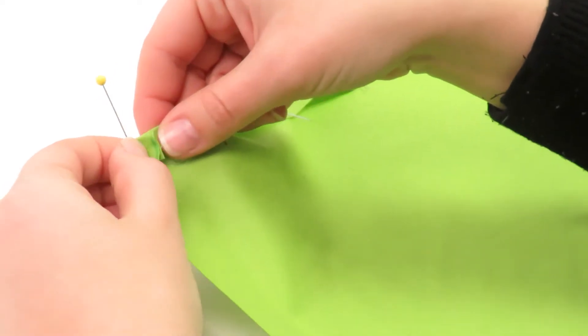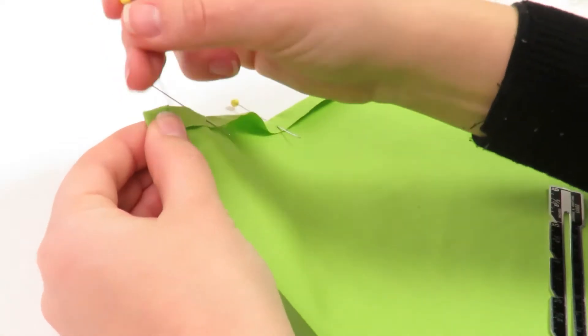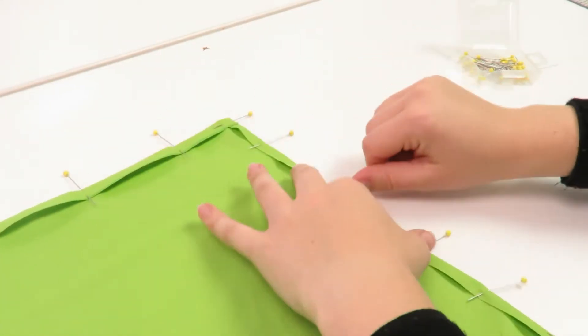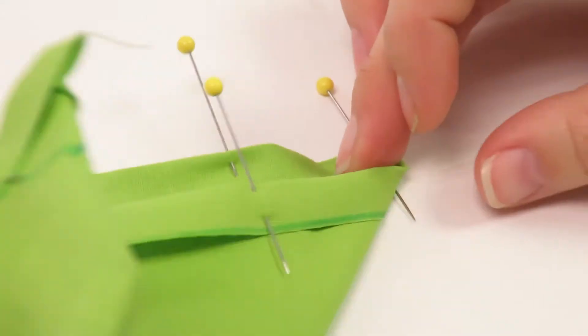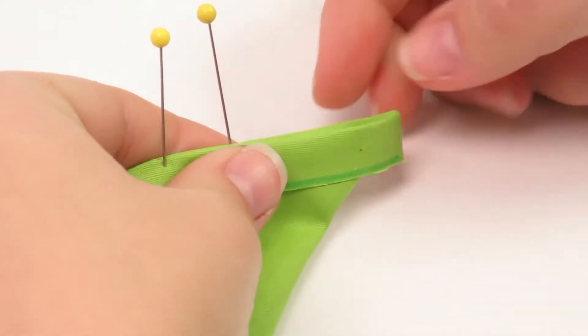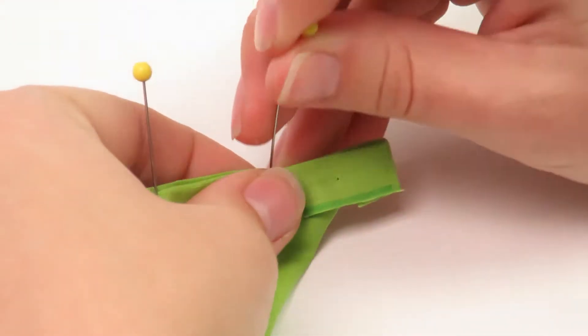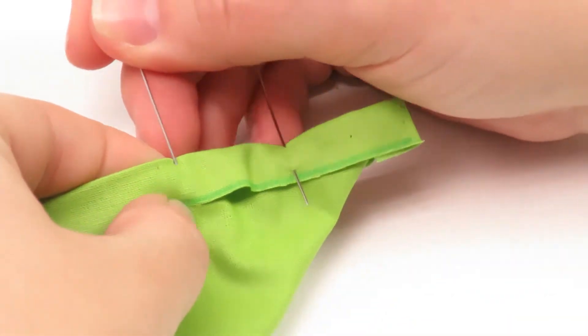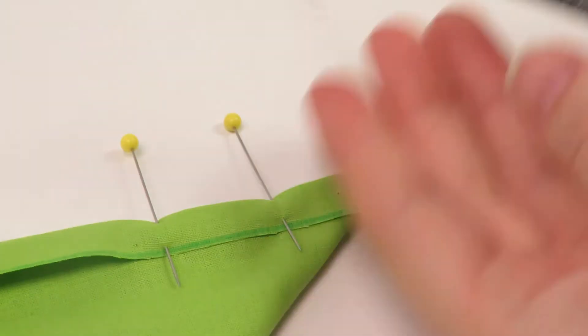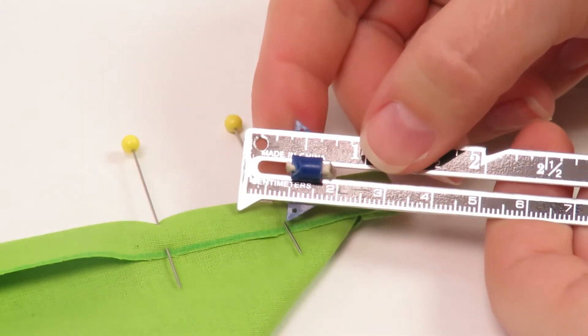You can finger press all around the seam allowance. Fold the serviette to create a triangle with the right sides of the fabric together, and pin the corners in place from the one centimeter seam allowance to the diagonal fold.